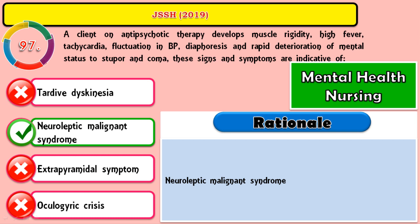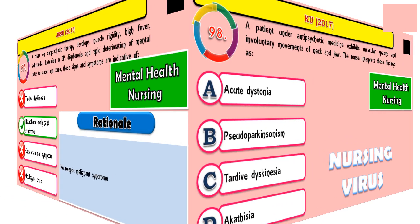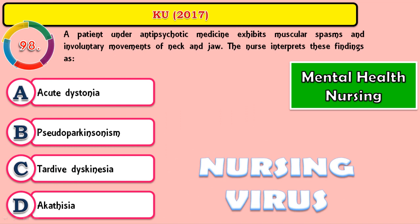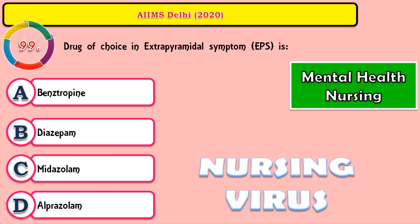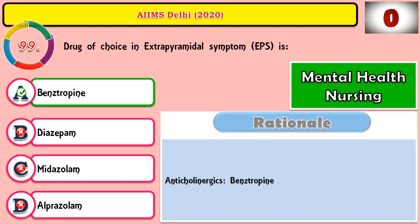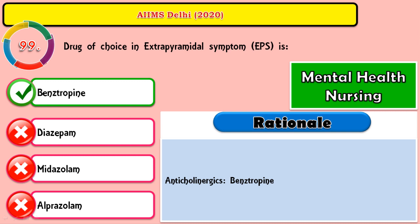Question 98: The patient under antipsychotic medicine exhibiting muscular spasm and involuntary movements of the neck and jaw — the nurse interprets this finding as acute dystonia. Question 99: The drug of choice in extrapyramidal symptoms is benztropine, which belongs to the anticholinergic agent group. They are mainly prescribed for all forms of EPS symptoms. Other drugs from the benzodiazepine group can also be prescribed, but the primary drug of choice is the anticholinergic.